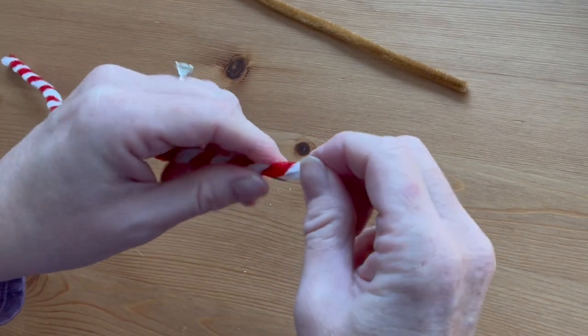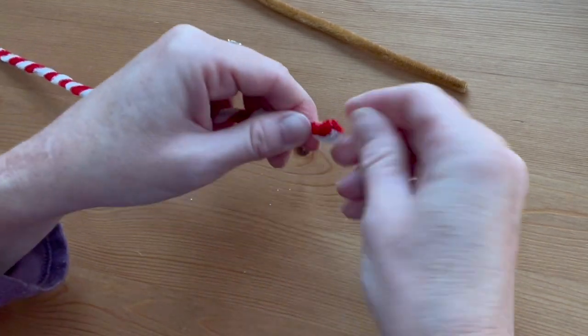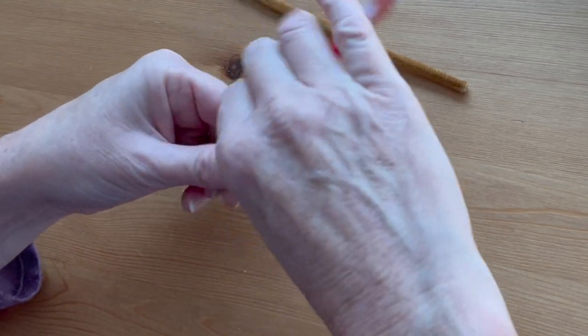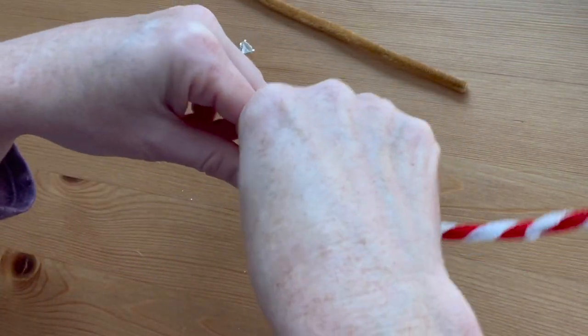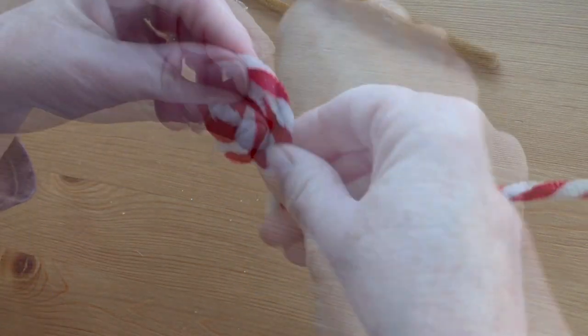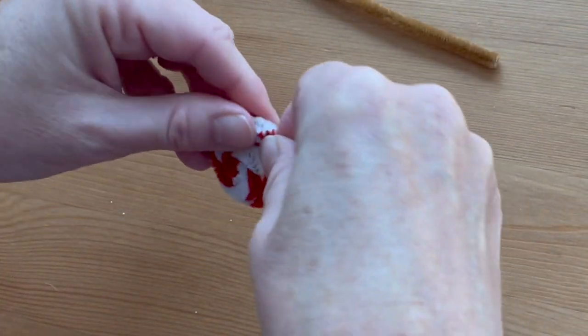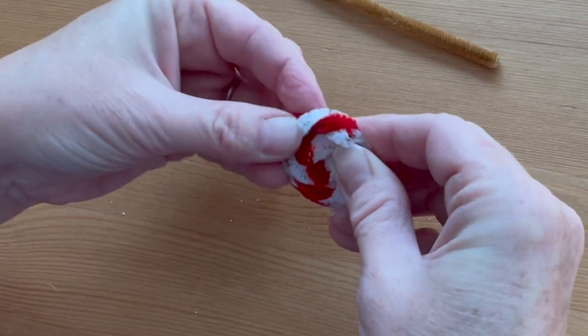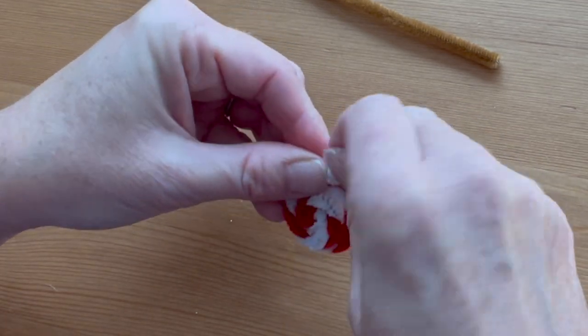Start at one end of the twist and tightly coil the twist into a circle. Keep it flat and even. When you get to the end, tuck the very end under the outside coil and twist it around to keep it in place.